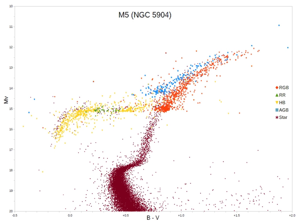Theories to explain these extreme horizontal branch stars include binary interactions, and late thermal pulses that asymptotic giant branch stars experience regularly, occurring after fusion has ceased and the star has entered the superwind phase. Despite the bizarre-sounding process, this is expected to occur for 10% or more of post-AGB stars, although it is thought that only particularly late thermal pulses create extreme horizontal branch stars, after the planetary nebula phase and when the central star is already cooling towards a white dwarf.